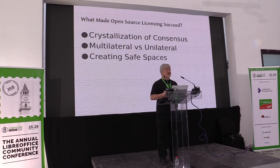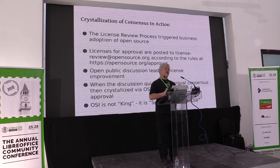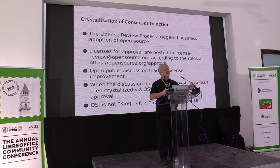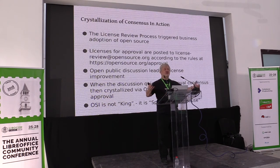And finally, open source creates safe spaces for collaboration. When I talk about crystallizing consensus, I'm really talking about the license review process. The license review process is the process by which a new open source license gets community approval. It's very important that licenses have community approval, because that is the gateway marker that tells developers that the terms of this license have been checked and there are no traps. Without that collective agreement, you wouldn't have anybody else's consensus to rely on.